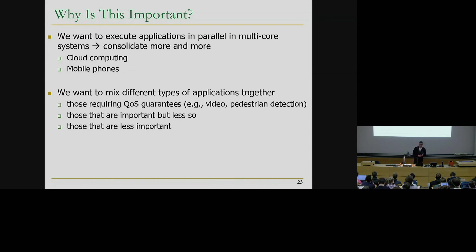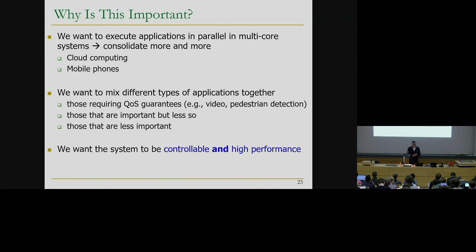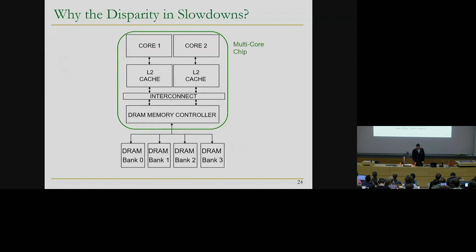Some applications require quality-of-service guarantees. For example, an example application might be pedestrian detection, which can be very critical depending on which system you run it in - in self-driving cars, this can be a really important task and you may want to ensure it runs with some QoS guarantees. On the same system, you may also want to run some other less important applications. As a result, we want a system that is controllable and also high performance.